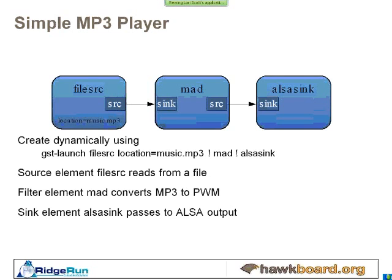The data for the MAD MP3 decoder gets fed into the MAD element, which does the decoding. The PCM data, after being decoded from MP3, is now audio data in a PCM format. It is available on the MAD source pad, which the GStreamer framework connects to the ALSA sink element — specifically its sink pad. The data gets routed into the ALSA sink, and the ALSA sink element interfaces with the ALSA API in Linux to pass the data out the audio output hardware on the Hawk board.